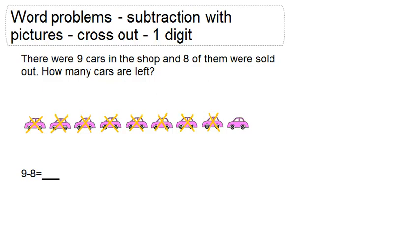Nine minus eight equals blank. So in this picture, we can see that we start with nine total cars, and I'm just going to label them as one through nine.